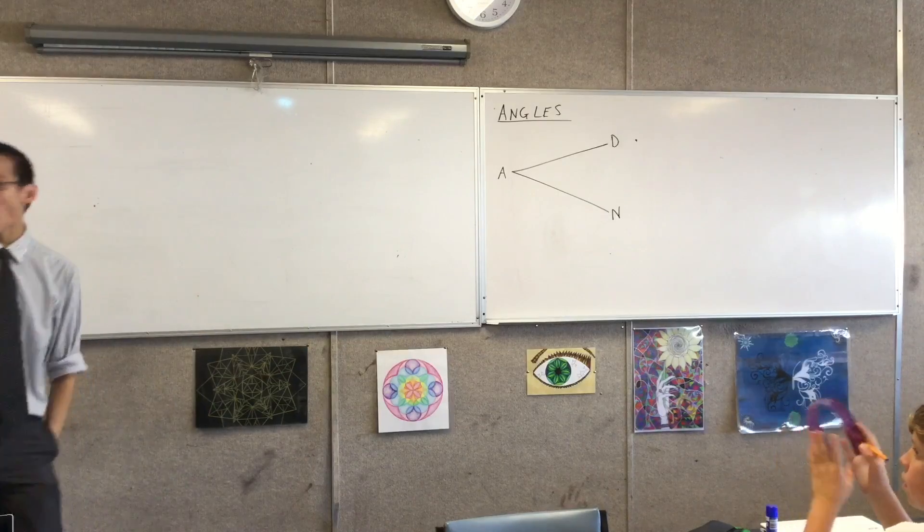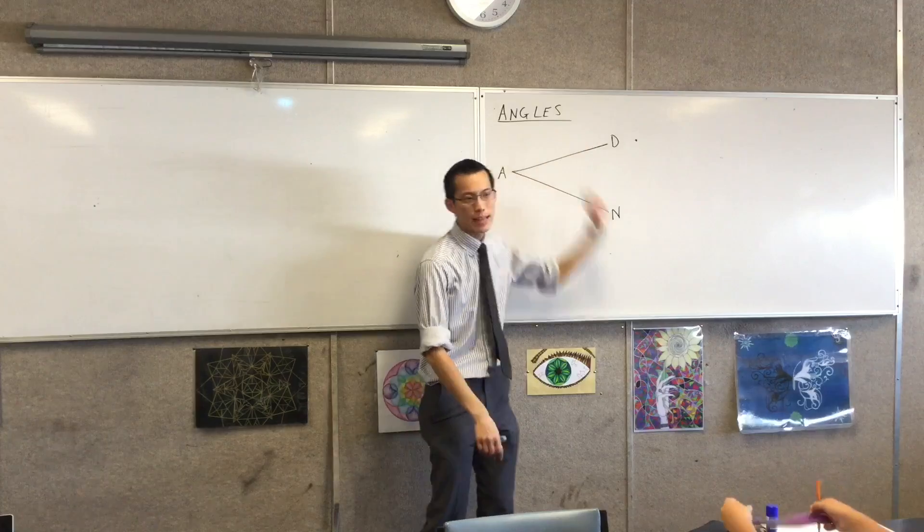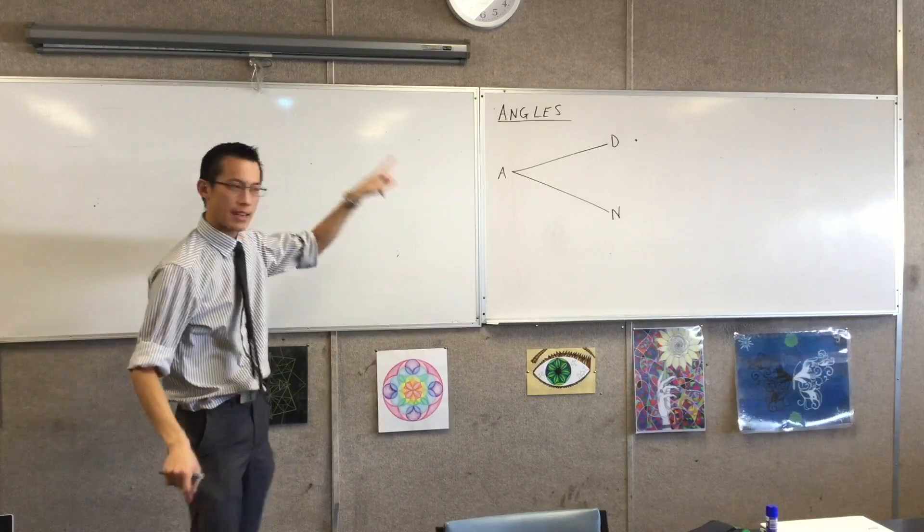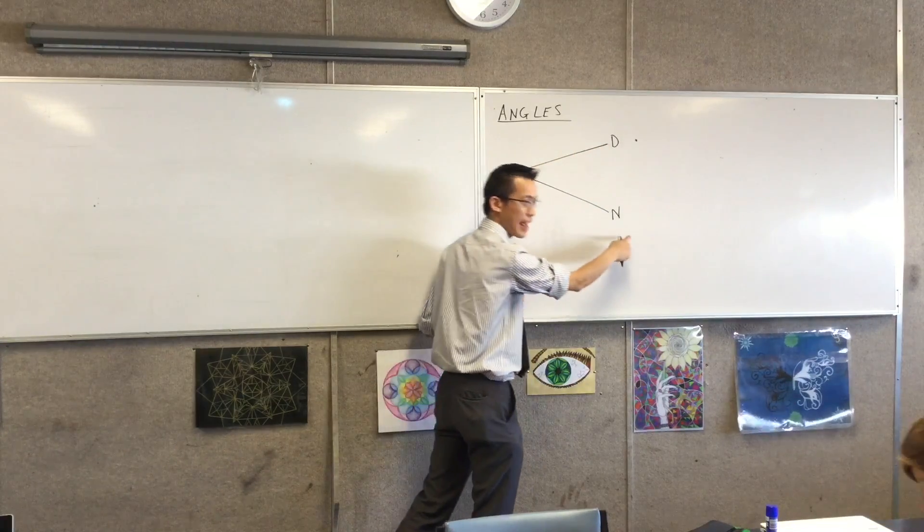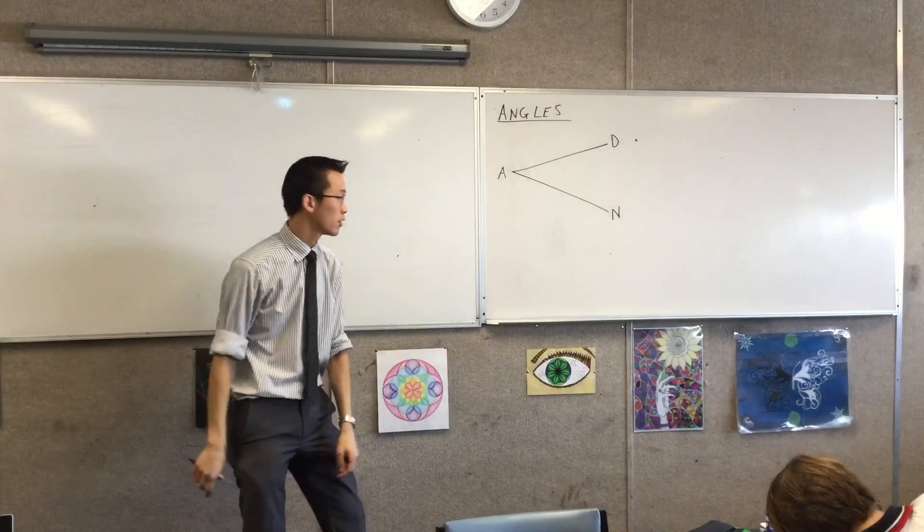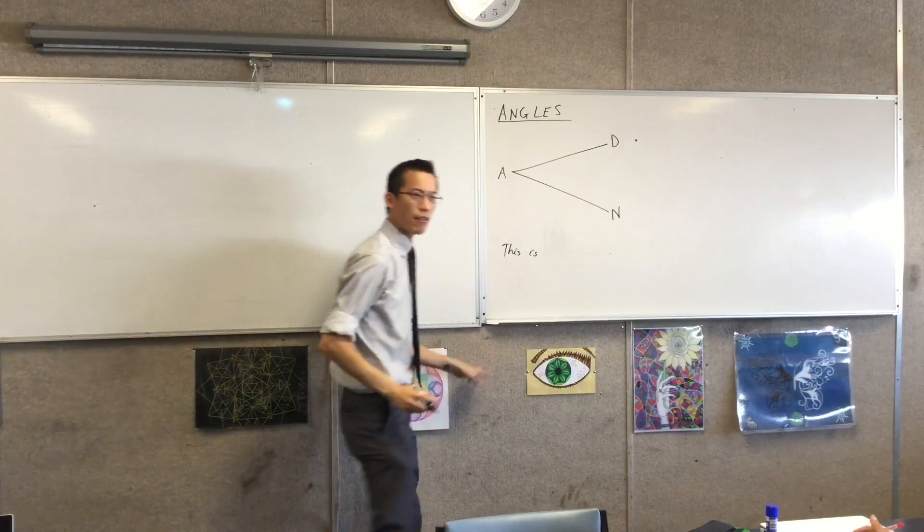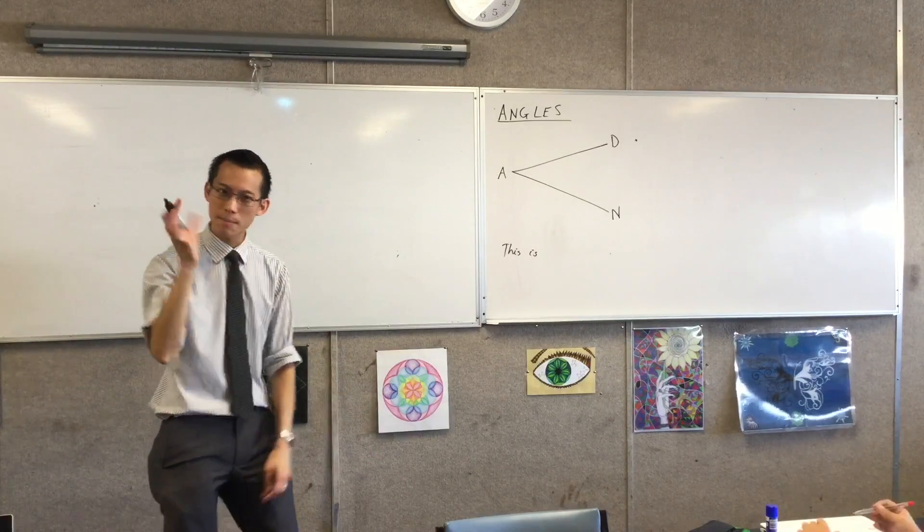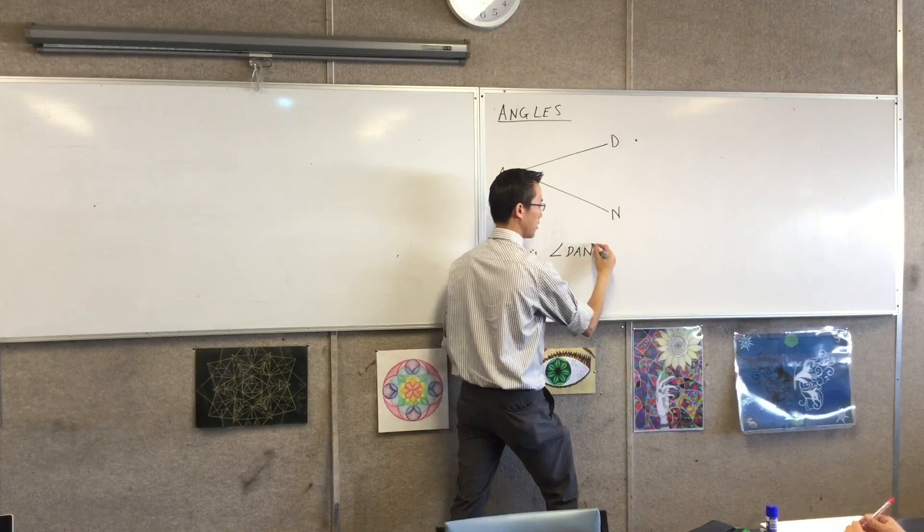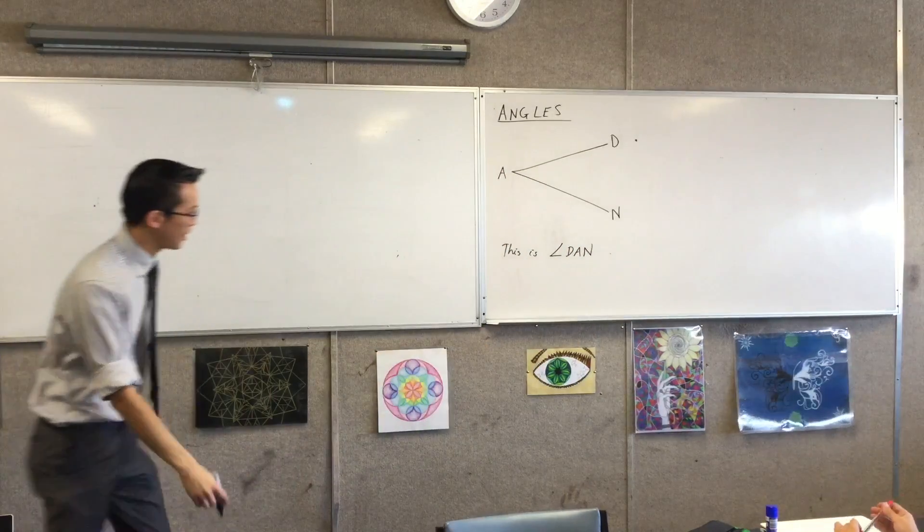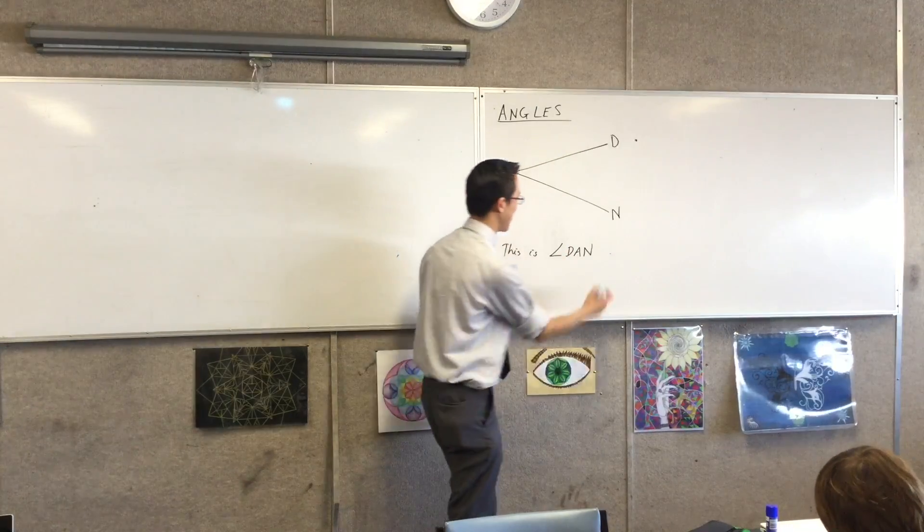I'm going to call this angle Dan, okay? Now, you will find, often, right, we have particular points on a diagram, you've seen this before, and we give them letters, so you can say, oh, look, there's D, and there's N, and there's A, okay? Now, this particular angle starts here, goes to here, and then ends there. You need three points to make an angle, don't you, okay? So, we're going to say, this is, and rather than saying angle, Dan, we have a symbol that we use. In fact, it looks a lot like this. This is our symbol for an angle, okay? You can see it kind of looks like an L that's just sort of really, really bent over, okay? This is Dan, okay?